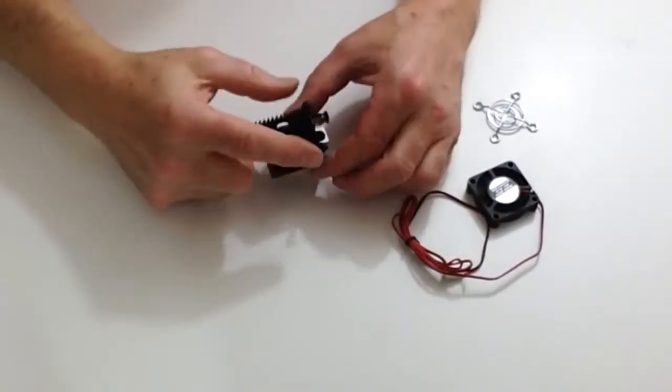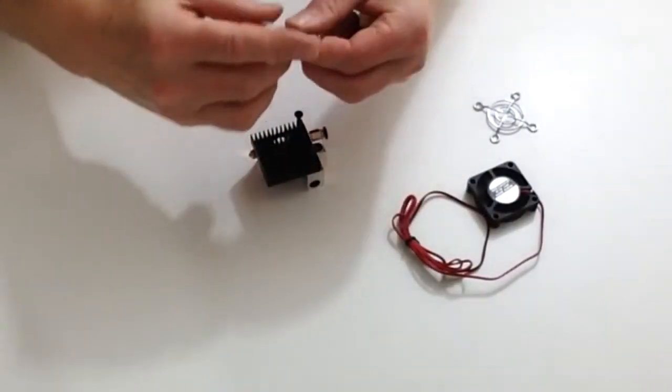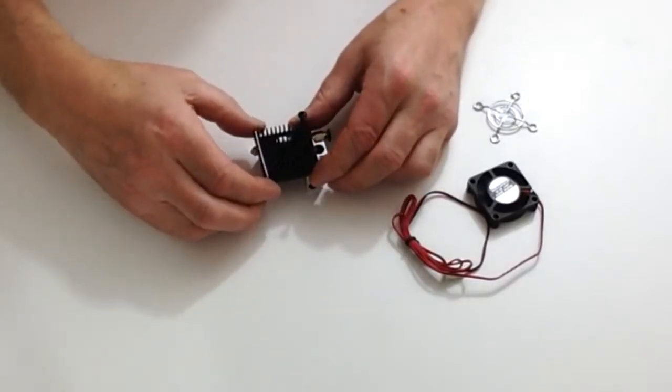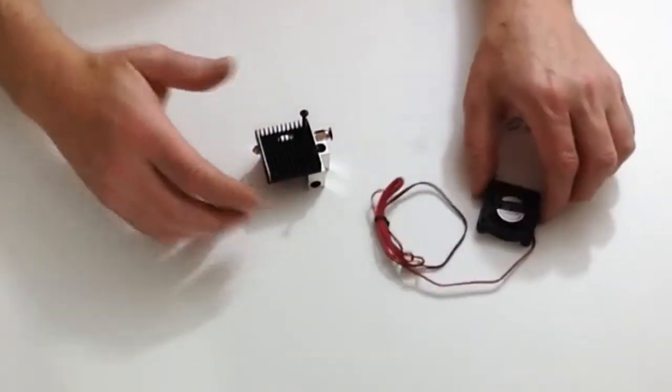Once you have done that and you have just placed the screws in there temporarily, take the fan draft blocking strip and place that into the bottom slot like so.